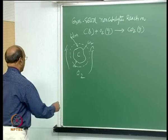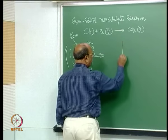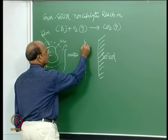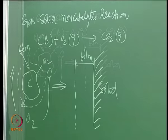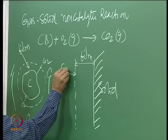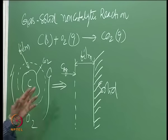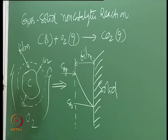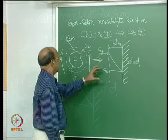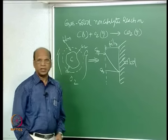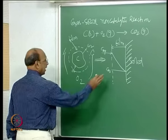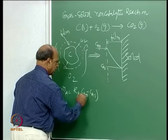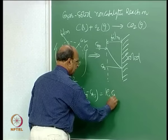The equations were written for this system. It can be modeled as a solid with a gas film around it. Drawing the profiles: CAG is the concentration of oxygen in the gas phase, and CAS is the concentration at the surface. At steady state, the amount of oxygen diffused through the film must equal the reaction taking place on the surface. So we write: minus RA equals KG times (CAG minus CAS), and for first order reaction, this equals KS times CAS.